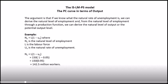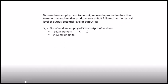We've worked out the level of employment. Now we need to use this to get to the level of output. Assuming workers produce one unit each, the natural level of output equals workers employed times output per worker — 142.5 million workers times one unit equals 142.5 million units. The difference between actual and potential output is called an output gap.